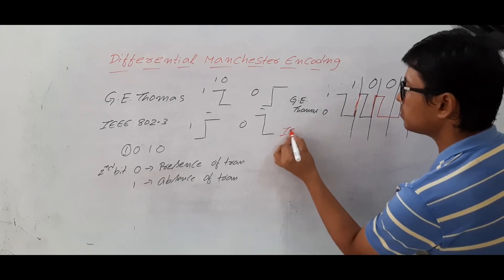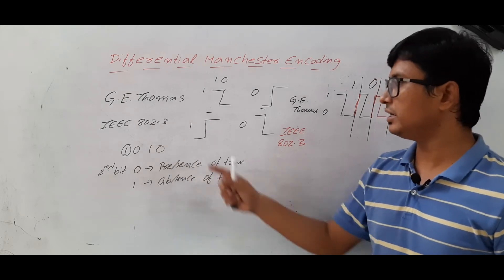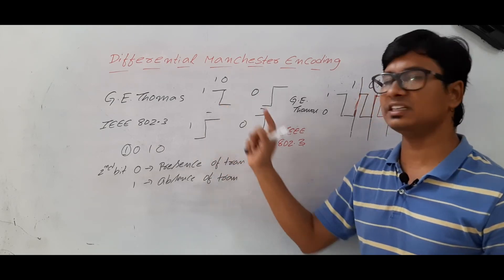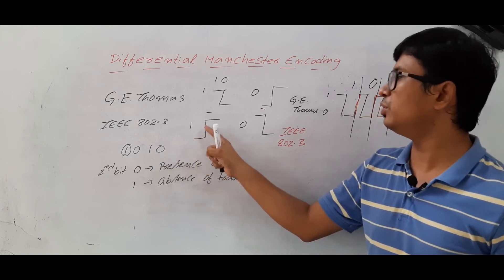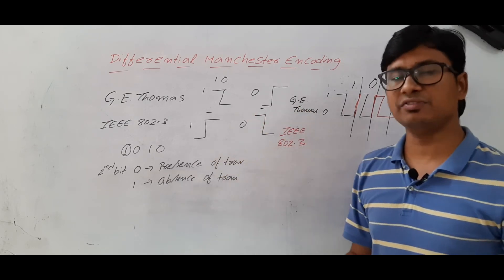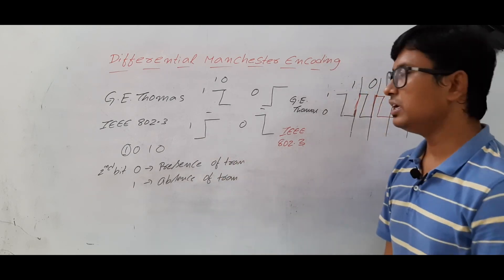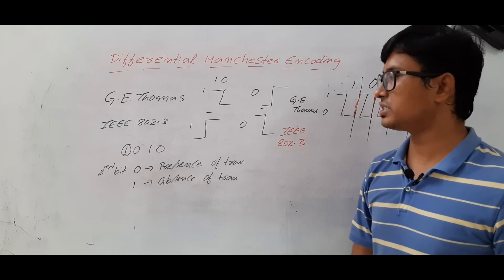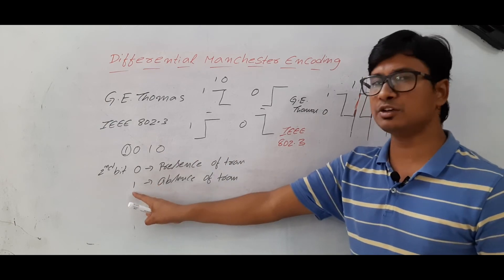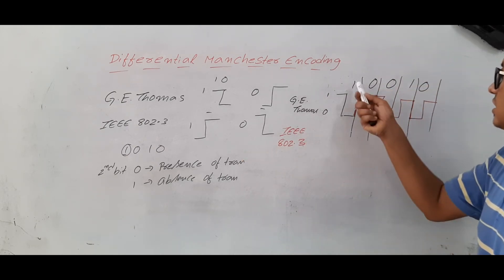Now we will discuss about IEEE 802.3 representation. In IEEE 802.3, even in Manchester encoding, 1 is represented as reverse of Z — going from low to high — and 0 is represented as a two-bit interval from high to low. Even in differential Manchester encoding for IEEE 802.3, the first bit if it is 1, I represent this one; if it is 0, I represent that one. From second bit onwards, I use the same principle: if there is a 0, presence of transition; if it is a 1, absence of transition.